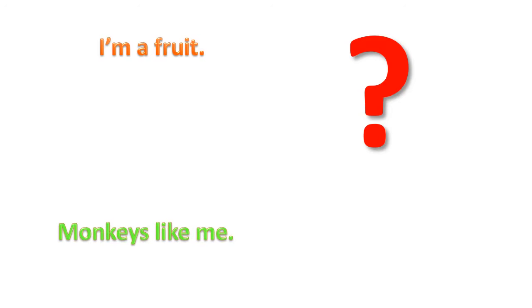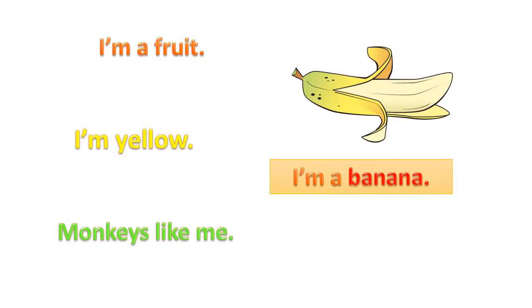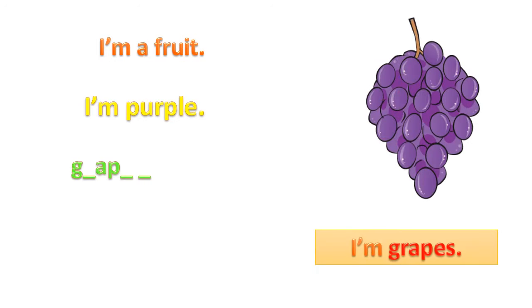Can you guess who am I? I'm a fruit. Monkeys like me. I'm yellow. Excellent — I'm a banana! Next one: who am I? I'm a fruit too. I'm purple. Now look at my spelling. Yes, I'm grapes! Good job.